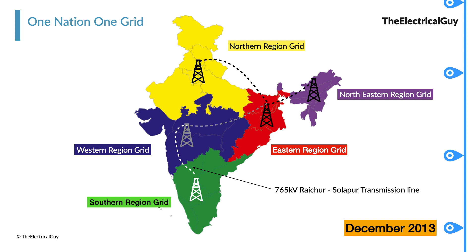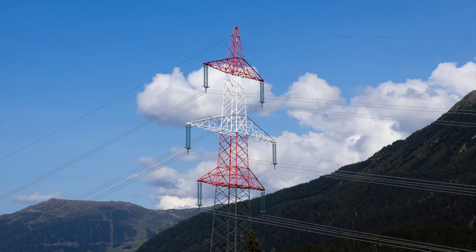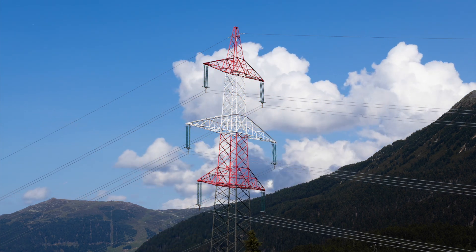Now if any region has a power deficiency, power can be easily transmitted to that region from regions having additional power. Power can be transmitted anywhere in the country since all regions are now interconnected. Today we have one of the largest electric grids in the world, running on one frequency of 50 Hz. As of December 2021, India's inter-regional power transfer capacity is more than 1,12,000 MW — meaning we can actually transfer 1,12,000 MW of power anywhere in the country. You can consider this national grid as a highway for electrical power.